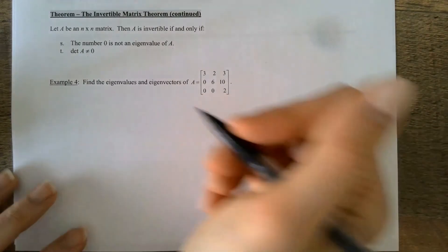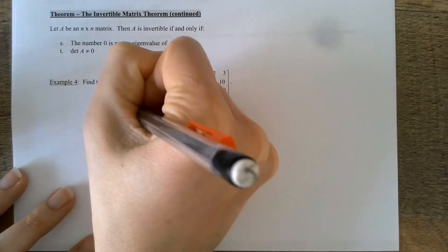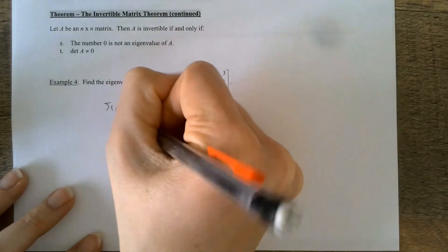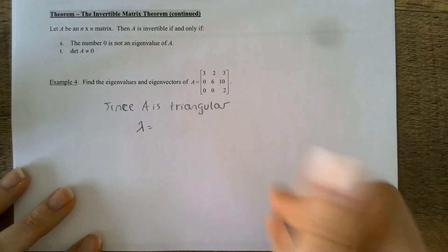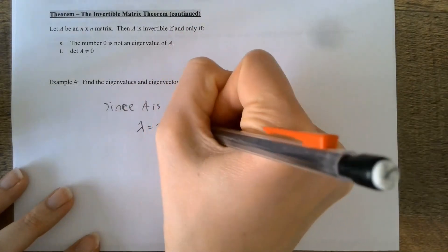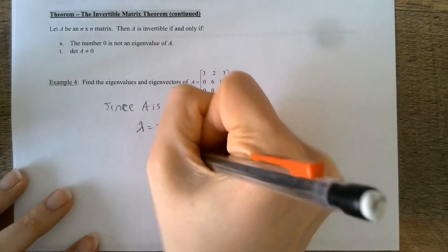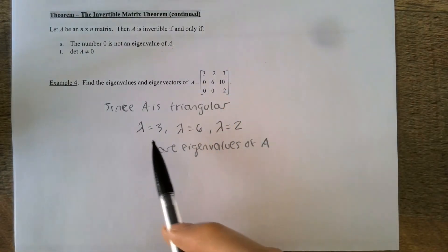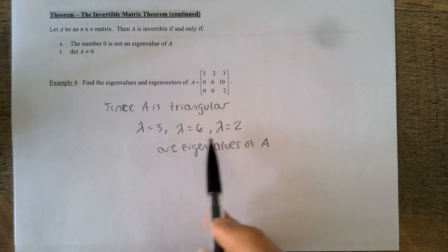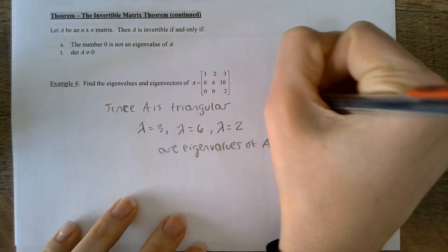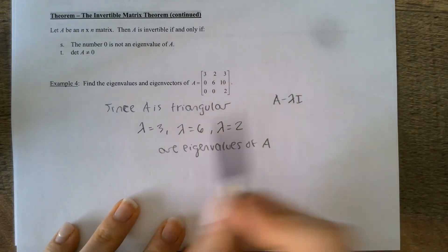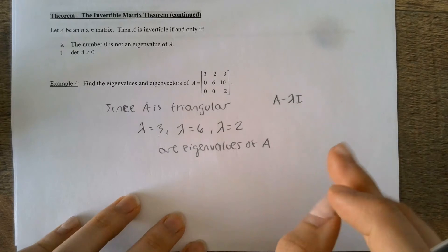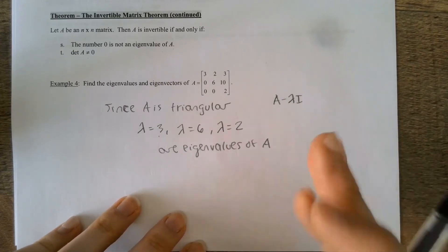This is an upper triangular matrix, so review from last time: since A is triangular, your eigenvalues are on the diagonal. You can check this with a cofactor expansion. So lambda equals three, lambda equals six, lambda equals two are the eigenvalues of A. To find the eigenvectors associated with each eigenvalue, you would plug each one separately into A minus lambda I, not all at the same time, then row reduce and find the parametric vector solutions to Ax equals zero.